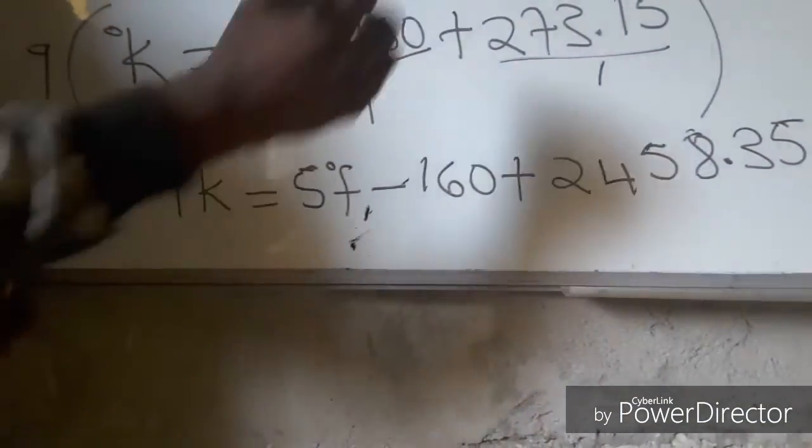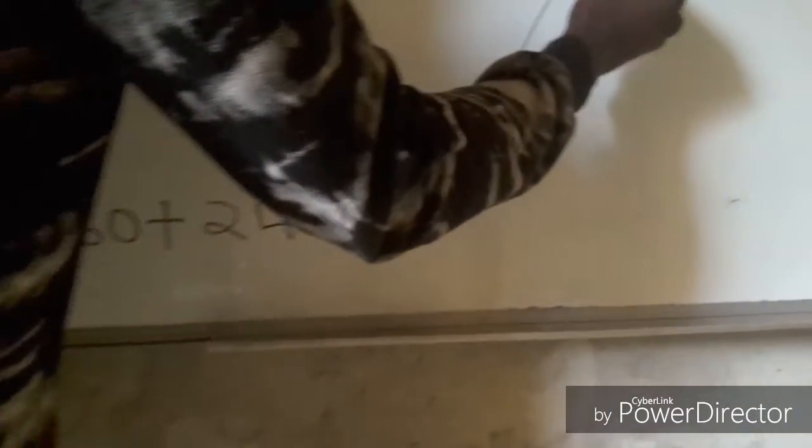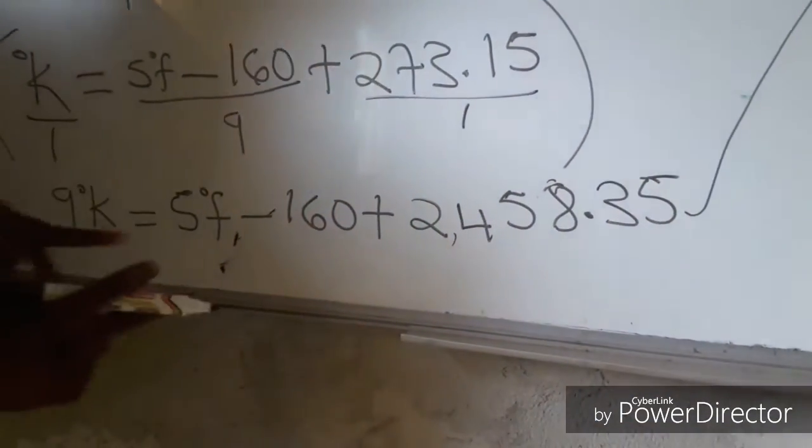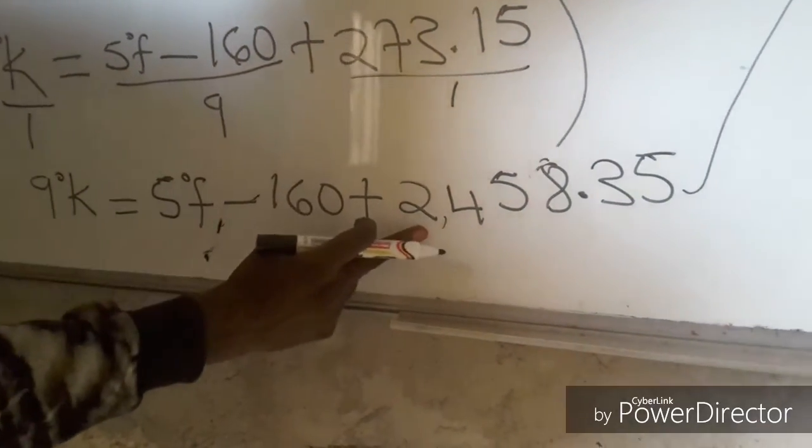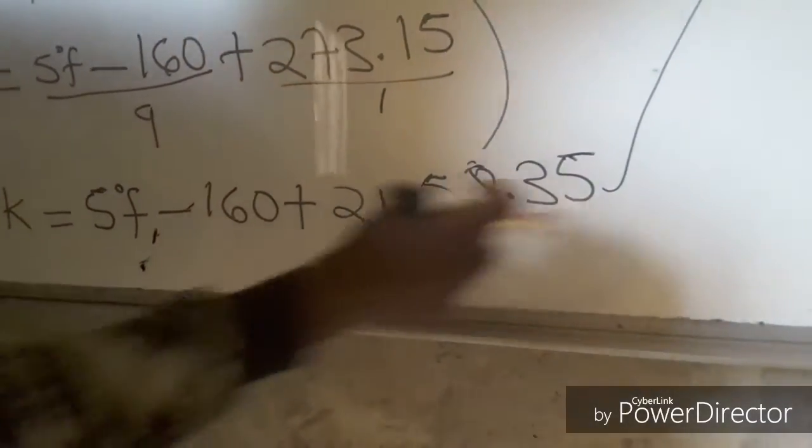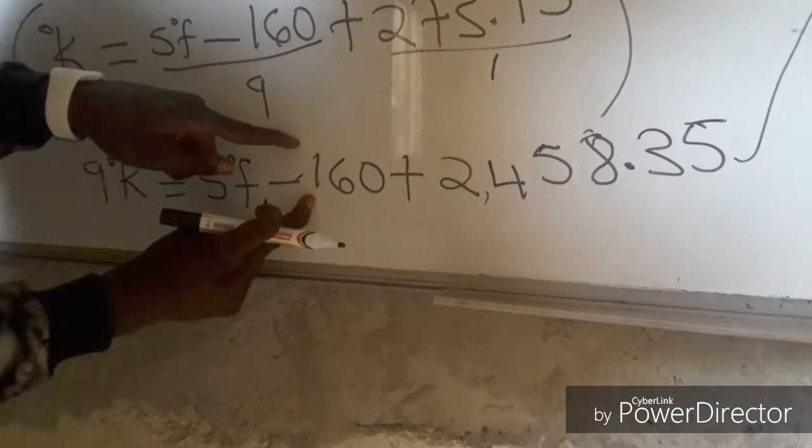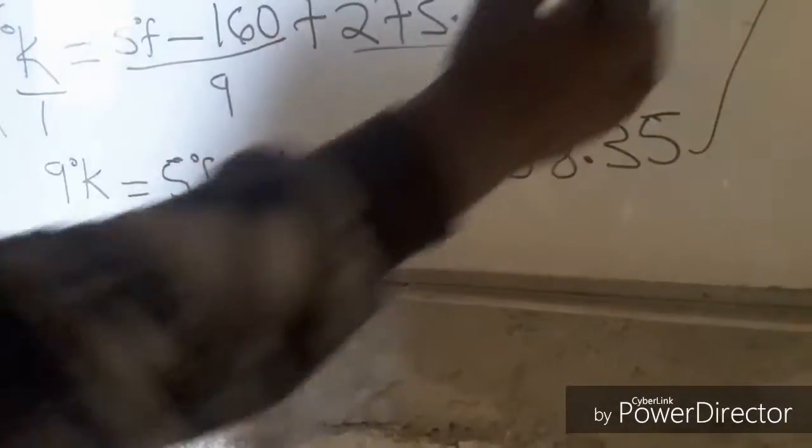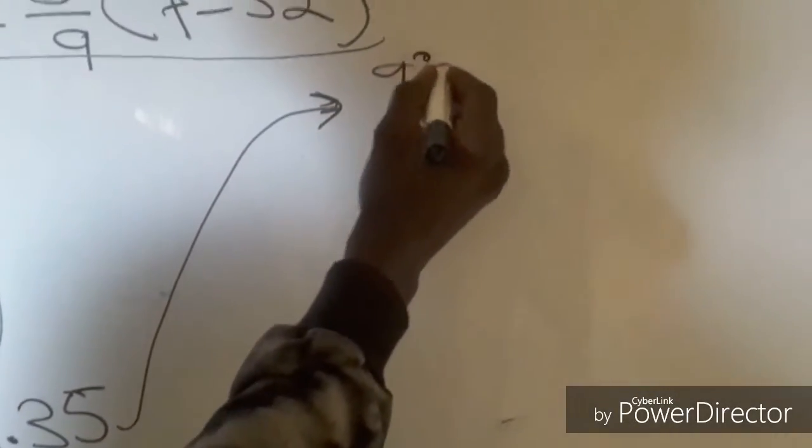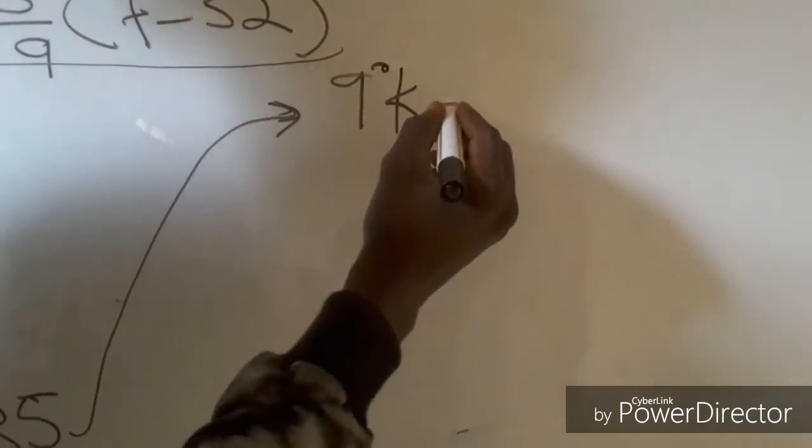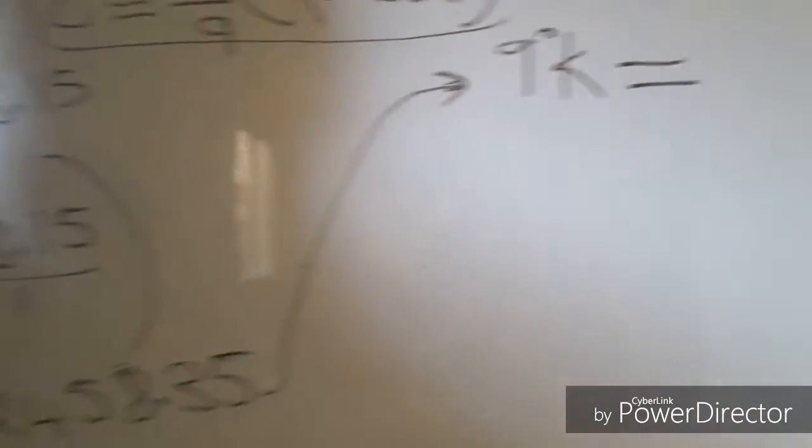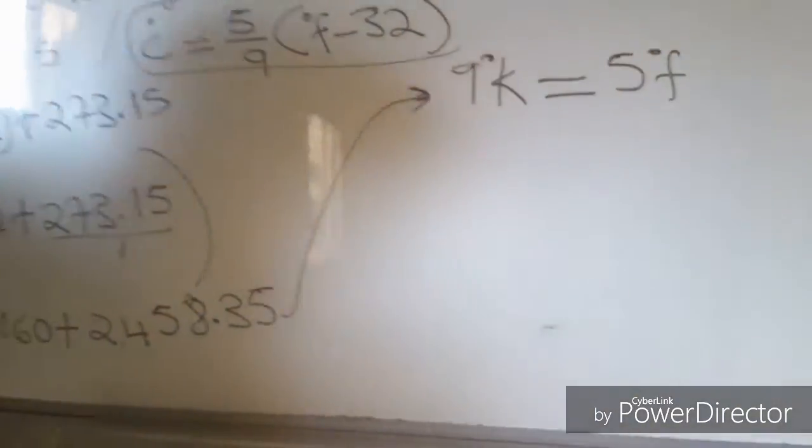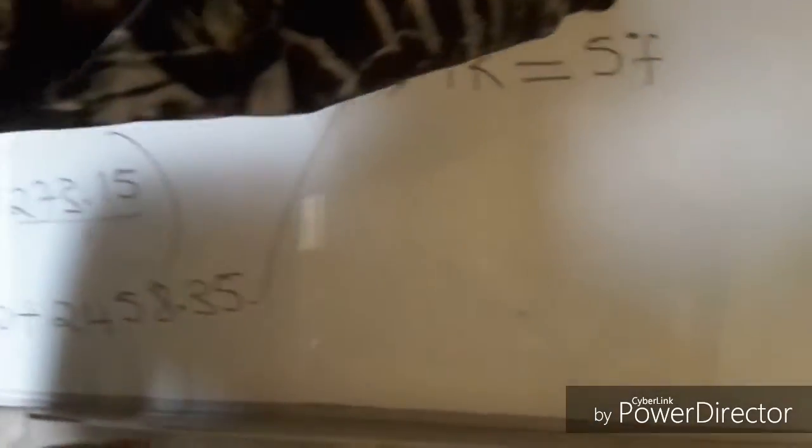So, we are done with this. We draw the arrow symbol for it. In this problem, the arrow indicates that the problem continues. Now, what we are going to do, we got minus 160 plus 2,458.35. So, we are going to subtract 160 from 2,458.35. So, we indicated, now we are going to have 9 degrees Kelvin. It must be equal to 5 degrees Fahrenheit.